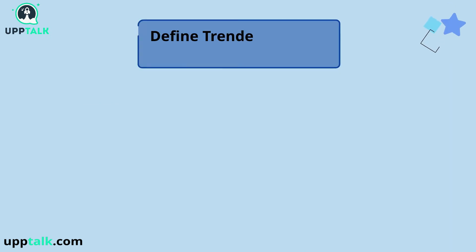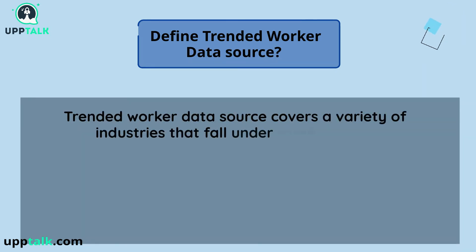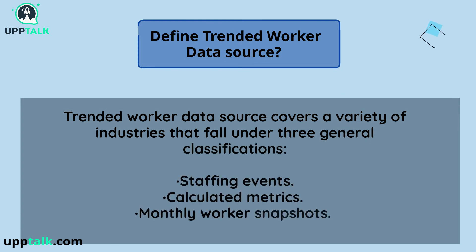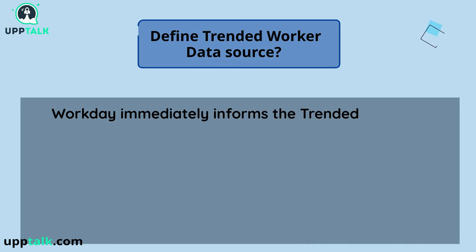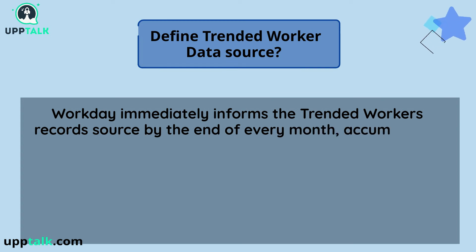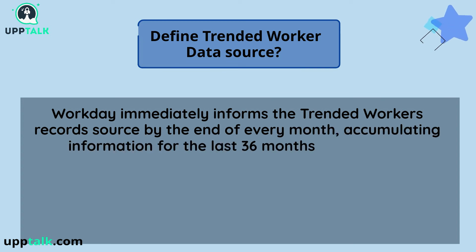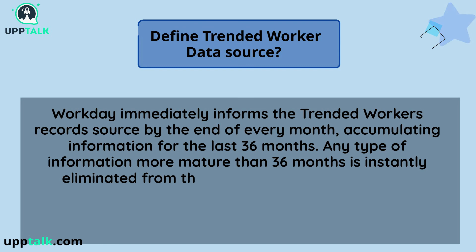Define Trended Worker Data Source. Trended Worker Data Source covers a variety of industries that fall under three general classifications: Staffing Events, Calculated Metrics, and Monthly Worker Snapshots. Workday immediately informs the Trended Worker's Record Source by the end of every month, accumulating information for the last 36 months. Any information more mature than 36 months is instantly eliminated from the data source.